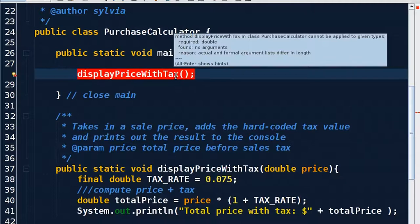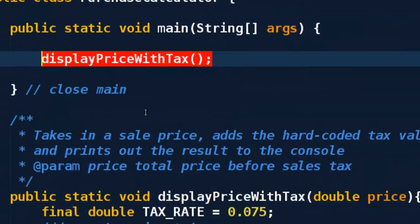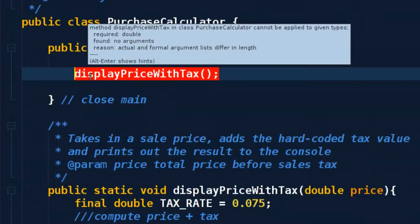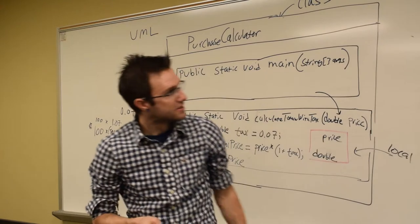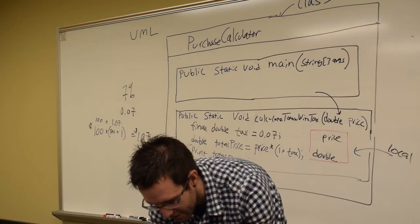No. I really need everyone to pull up this error message and realize that it is your friend, and we're going to read it, and we're not going to be the people that get a red line and freak out because they don't know what it says. We need to internalize this in our bones. What does this error message say? Please read it, someone. Method display price with tax in class purchase calculator. Oh, sorry. I was trying to zoom. I made the problem worse. Cannot be applied to the given types. Yes. Require a double bound. No arguments. The actual formal argument list differ in length.